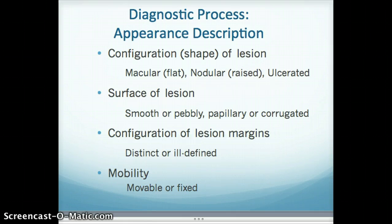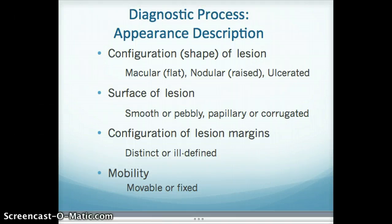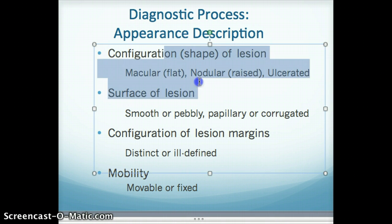The diagnostic process appearance description has several terms to describe these issues. When we look at the configuration or shape of a lesion, we'll often use the terms macular for a flat lesion like a freckle, nodular or raised like a mole, or ulcerated like an aphthous ulcer — a lesion that goes down into the tissue. The surface of the lesion: is it smooth, or is it somewhat pebbly appearing, papillary with little pieces sticking out like little fingers, or corrugated like an aluminum tin roof going up and down?